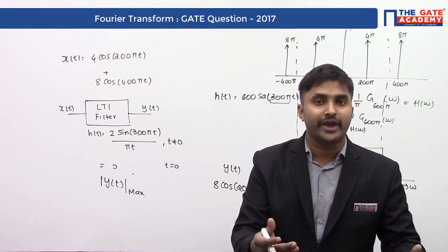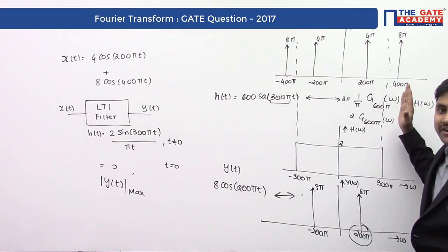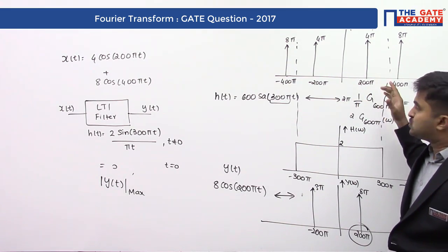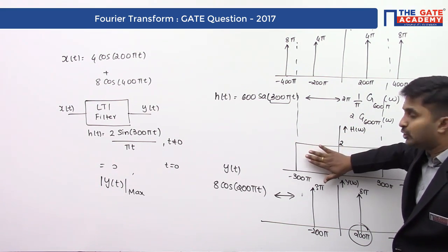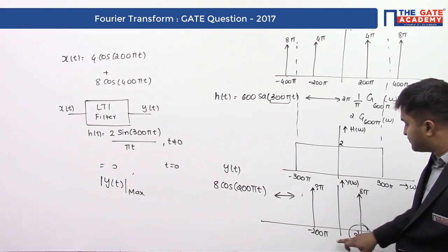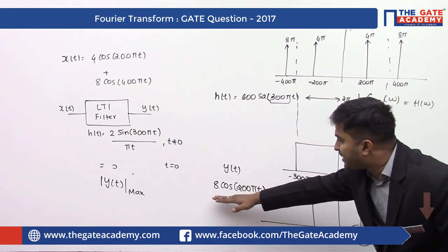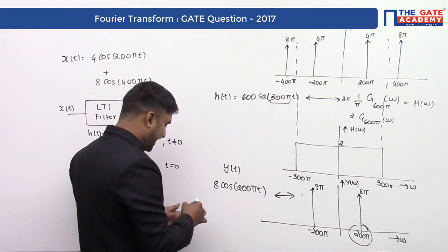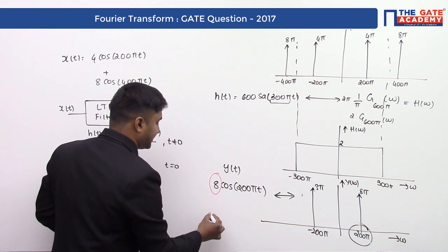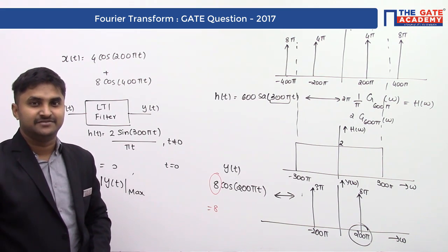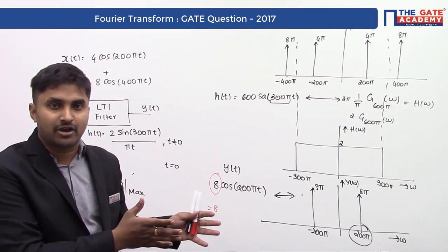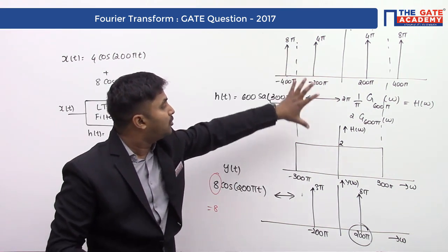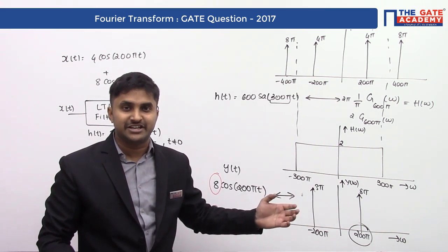This is why we call it a filter. The input had two frequencies, 200π and 400π. The frequency response H(ω) filters out the 400π component and passes only 200π. So the output y(t) = 8cos(200πt), and the maximum value of |y(t)| is simply its peak value, which is 8. The beauty of this question is that it uses two concepts: LTI convolution and Fourier transform. Thank you for listening.